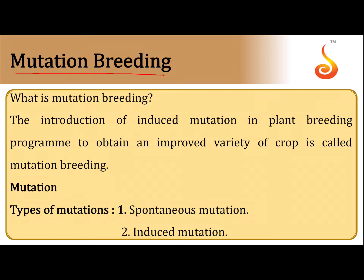New disease resistant varieties of plants are developed through mutation breeding. The introduction of induced or artificial mutation in a plant breeding program to obtain an improved variety of crop is called mutation breeding.